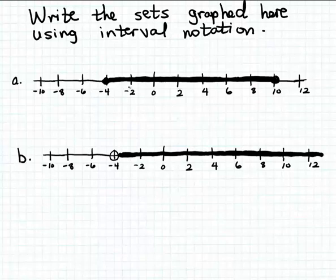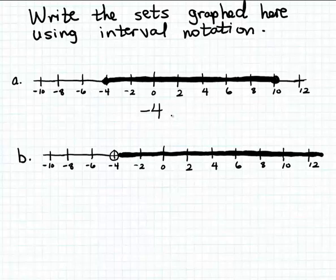So here we see this set of numbers. This set that's graphed here has two boundary values. The set begins at negative 4 and extends to positive 10, and includes all numbers between minus 4 and positive 10. So the two given boundary values here are minus 4 and 10, and this set includes all numbers between minus 4 and 10.